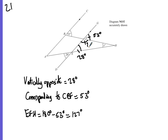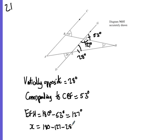So in there we have 127 degrees, and then we want angle FHE, which is X. X is in a triangle, so we do 180 take away 127 and then take away 28 as well, which gives our solution of 25 degrees.